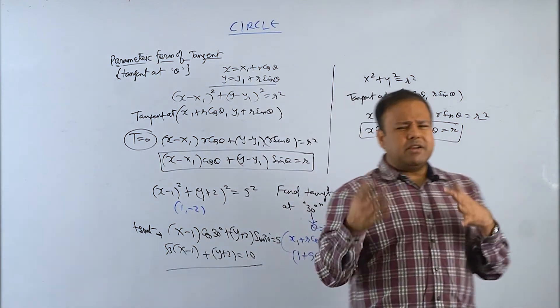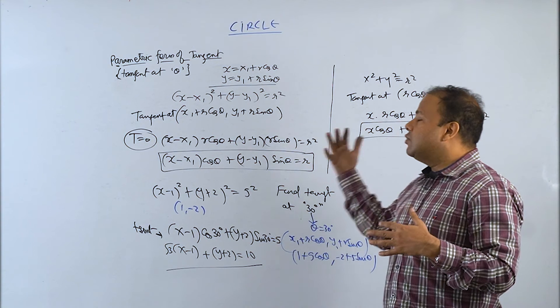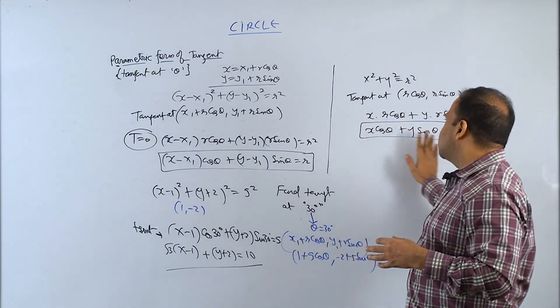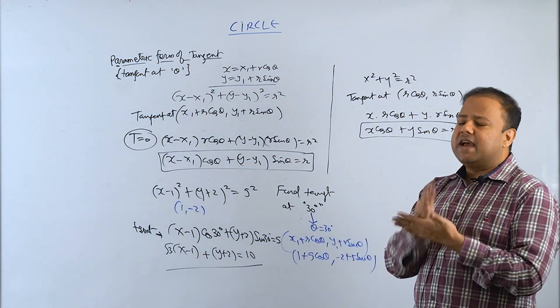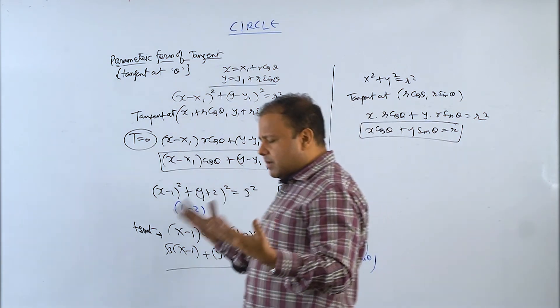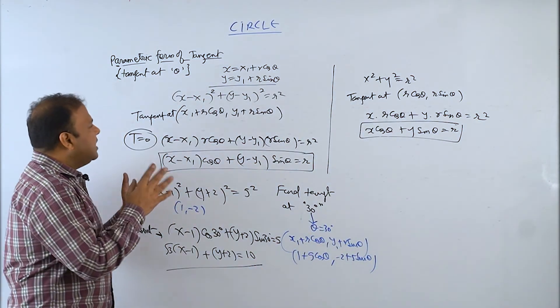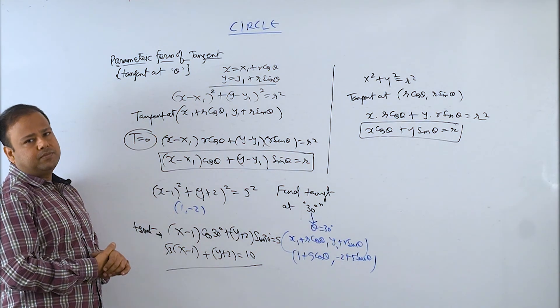Directly parametric form doesn't have too much use as such. But in future questions we are going to use it. So you have to know that this is standard circle's parametric form and this is general circle's parametric form of tangent. This is nothing special, simply tangent at the parametric point. So I am finishing this up here and we'll continue in the next video. Thank you.